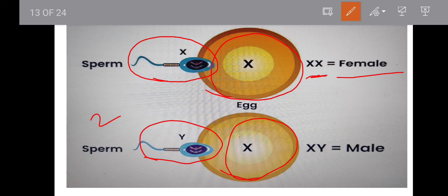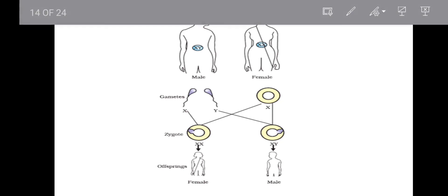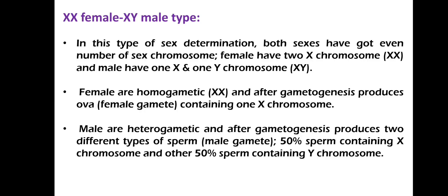So when X-containing ovum is fertilized by X-containing sperm, it produces an XX female. And when X-containing ovum is fertilized by Y-containing sperm, it produces an XY male. This type of sex determination in human beings is known as the XX female, XY male type.